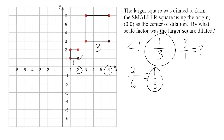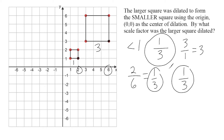Or if I wish, I could take the same corresponding points and use the y values. The y value of this point is one and the y value of this point is three, which gives us a scale factor of one third once again. If you want to use corresponding points as a strategy, you have to remember that this will only work when the center of dilation is the origin, or zero comma zero.